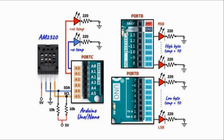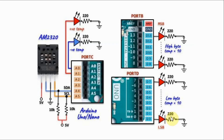A circuit diagram of the implemented system is shown. The AM2320 sensor is interfaced with port C of the microcontroller through the I2C lines. Two LEDs are connected to two pins of port C — a blue LED to represent negative temperature and a red LED to represent positive temperature. The 15-bit value of the temperature is displayed on LEDs connected to port D and port B of the microcontroller.